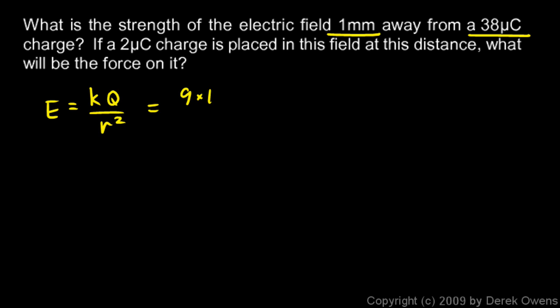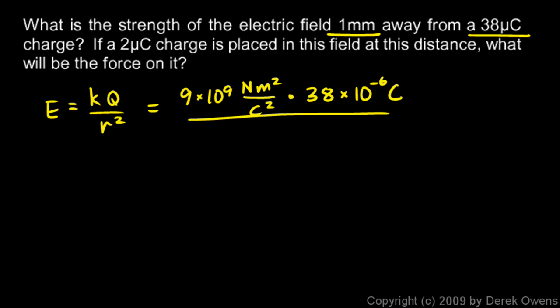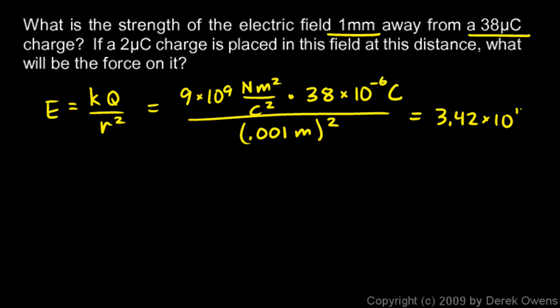k is 9 times 10 to the 9th newton meters squared per coulomb squared — that's the electrostatic constant, it's always the same. q in this case is 38 microcoulombs: 38 times 10 to the negative 6 coulombs. Divide by r squared — r is 1 millimeter, that's .001 meters, squared. Note the units are consistent: meters and meters. Don't forget to square r when you do the calculation. We get 3.42 times 10 to the 11th newtons per coulomb.